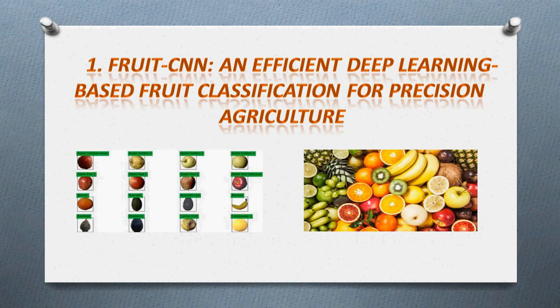The first project is Fruit CNN — an efficient deep learning based fruit classification for precision agriculture. These projects are from IEEE transactions or COFOS journal papers, so they are high standard projects.